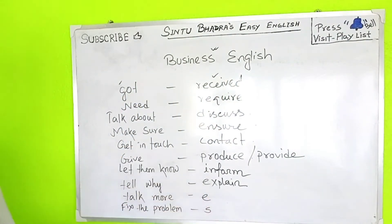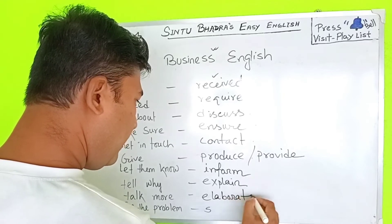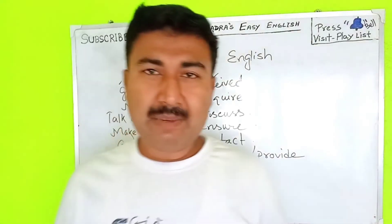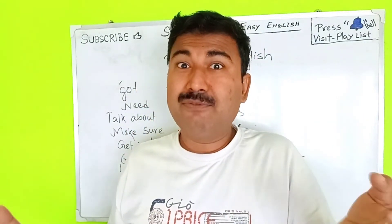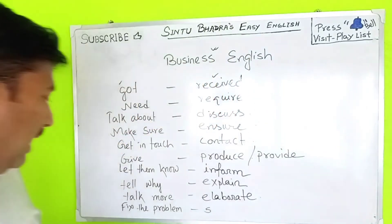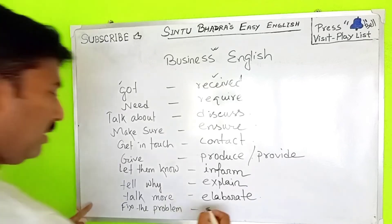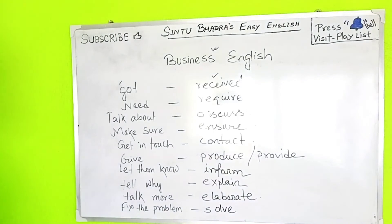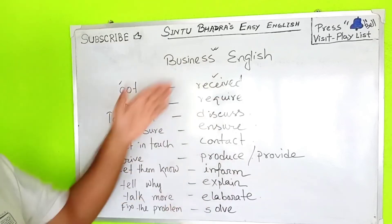Next: 'talk more' — in business English, use 'elaborate.' For example: 'Elaborate the fact.' Then: 'fix the problem' — in business English, use 'solve' or 'resolve.' So 'solve or resolve' is the better English used specially in business contexts.